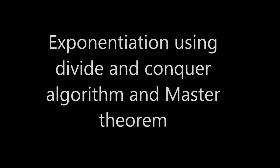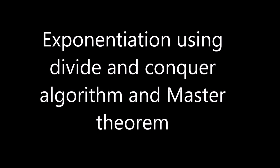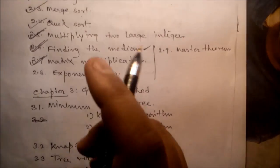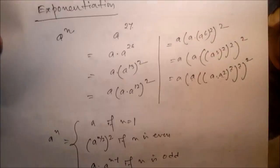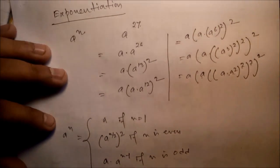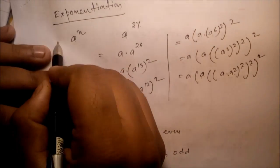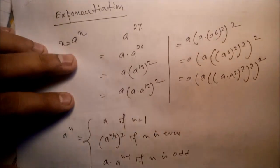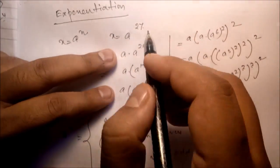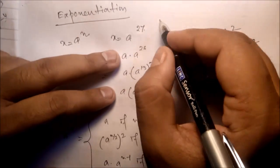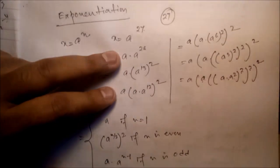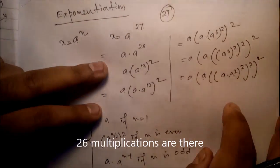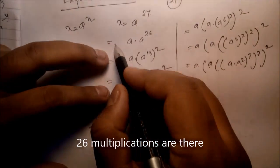We will discuss exponentiation and the Master Theorem. How do we calculate a to the power n? For example, x equals a to the power 27. How many multiplications are there? There are 27 multiplications. Can we do something different so that we can compute it more easily?